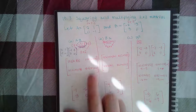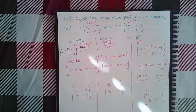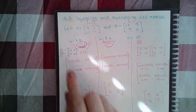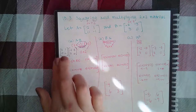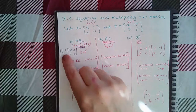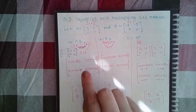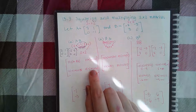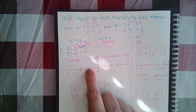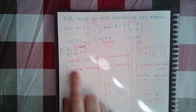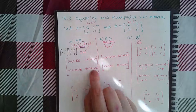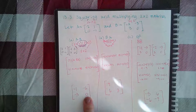Adding those results: negative four plus three gives negative one, and negative six plus zero gives negative six. Now for the second row: take the second row of A times the first column of B — zero times negative two and negative one times three. For the second row, second column: zero times negative three and negative one times zero. Combining results gives negative three and zero.